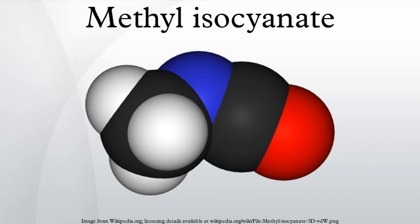Methylisocyanate is an intermediate chemical in the production of carbamate pesticides. It has also been used in the production of rubbers and adhesives. As a highly toxic and irritating material, it is extremely hazardous to human health. It was the principal toxicant involved in the Bhopal disaster, which killed nearly 8,000 people initially and approximately 20,000 to 30,000 people in total.